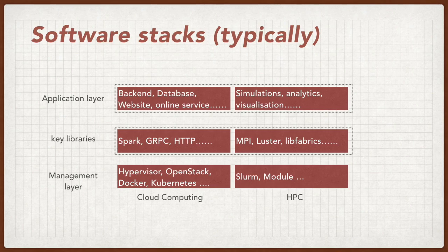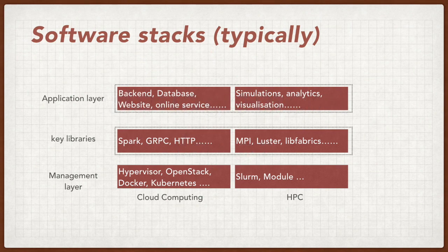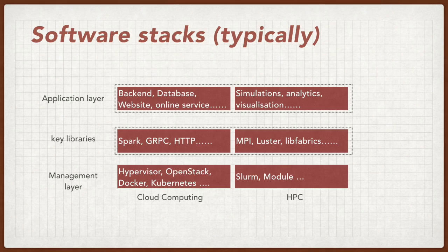Let's go through the typical software stacks quickly. For the management layer, cloud computing uses virtualization techniques, so it may use a hypervisor or OpenStack for Infrastructure as a Service, Docker and container techniques for program management and better isolation, and Kubernetes for Platform as a Service. For HPC, there is no virtualization service; instead, it uses Slurm as a scheduler and the module system for managing environment variables.